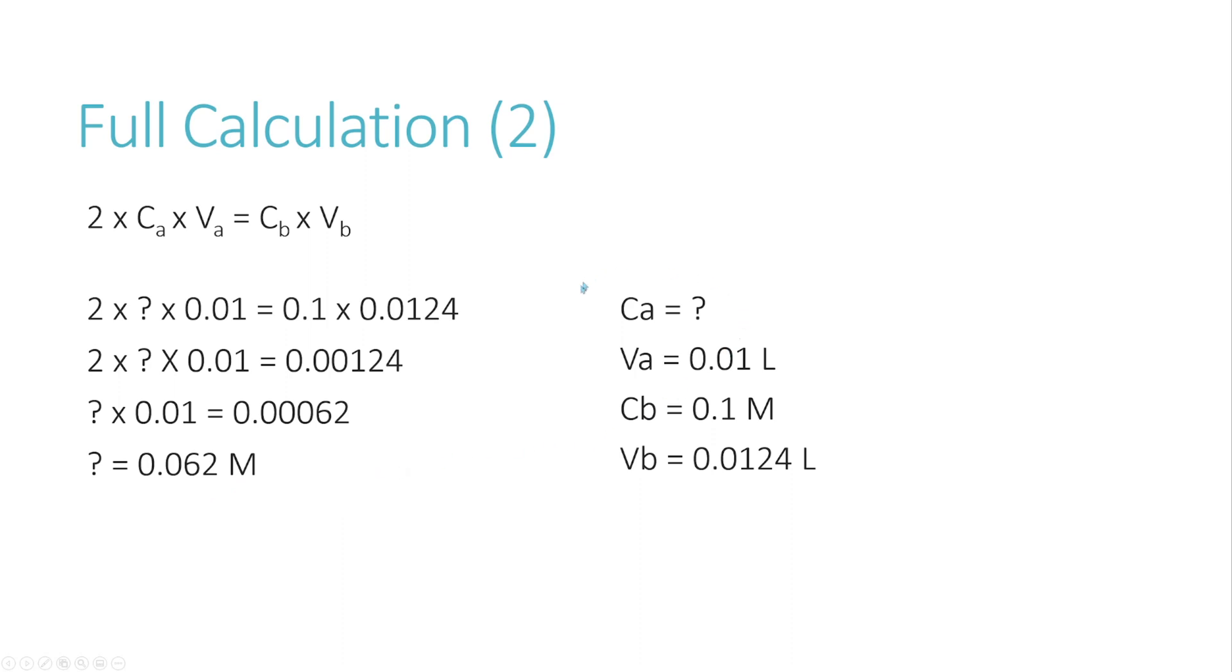So what we're saying then is the acid concentration in our sample is 0.062 molar, which is great. But if you remember, we don't report the answer in molar, we report it in grams per liter as tartaric acid. So for that, we need to know the molecular weight of tartaric acid, which is 150. Then simply, all we have to do is times our answer, which is in molar, by 150. In doing this, this gives us an answer of 9.3 grams per liter.